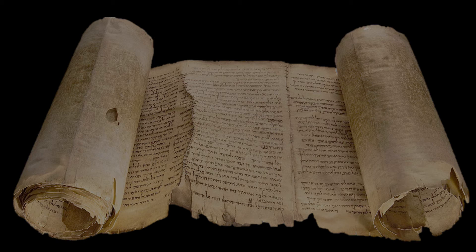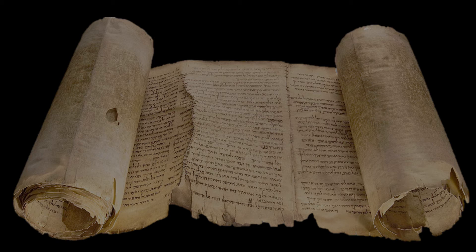Another name: the I AM. Go back to Exodus chapter 3. Moses is trying to get out of what God wants him to do. In verse 13, Moses said to God, 'When I come unto the children of Israel and say the God of your fathers sent me, what is his name — what shall I say unto them?' God said unto Moses, 'I AM THAT I AM. Thus shalt thou say unto the children of Israel: I AM hath sent me unto you.'